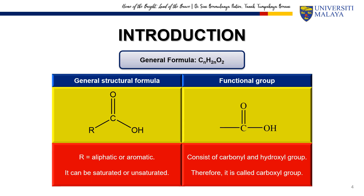What makes a carboxylic acid? The key feature is the carboxyl group COOH, which consists of a carbonyl C=O and hydroxyl OH both attached to the same carbon. The OH part is responsible for its acidic properties. The general formula for carboxylic acid is CnH2nO2. For example, ethanoic acid has the formula CH3COOH — it has two carbon atoms (n=2), four hydrogen atoms, and two oxygen atoms, fitting the formula perfectly.